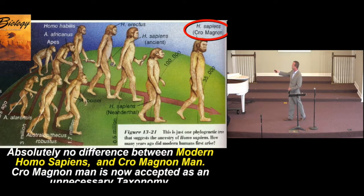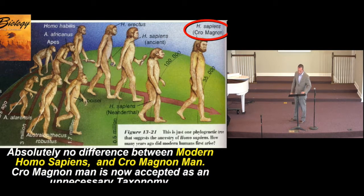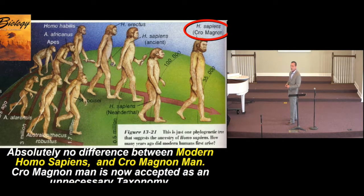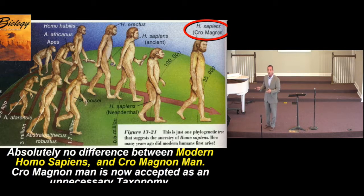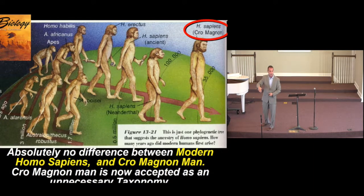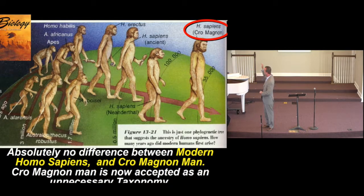Starting with the first on this textbook's list: Cro-Magnon Man, dated 10,000 to 40,000 years ago. What's funny is we now have him running right alongside modern Homo sapiens, which go all the way back to 200,000 years. Many now believe the taxon of Cro-Magnon Man should be sunk into Homo sapiens — a Cro-Magnon Man could walk up to you today. He is morphologically just like you and I, and most believe that now.